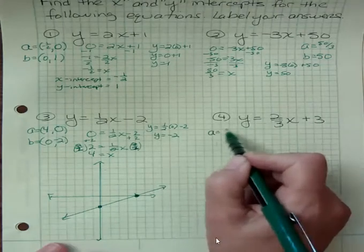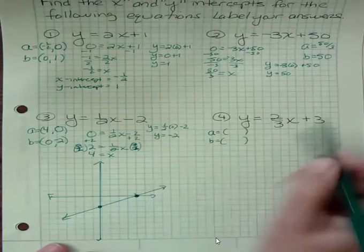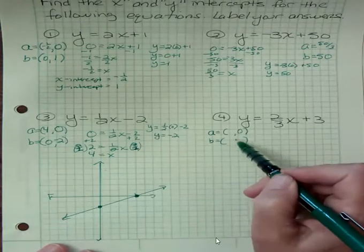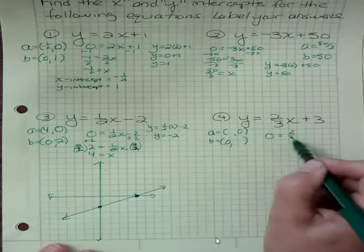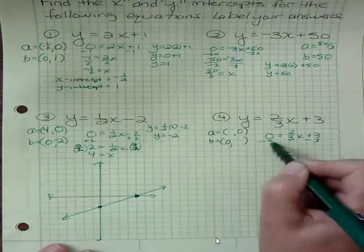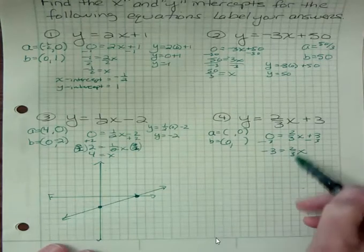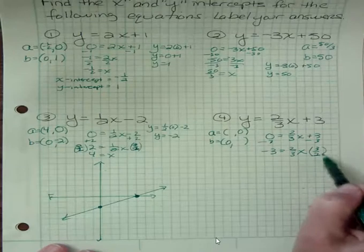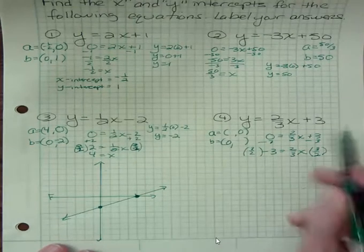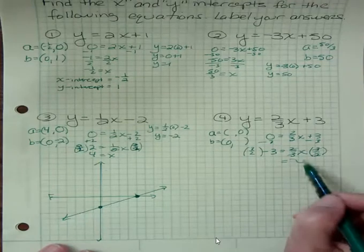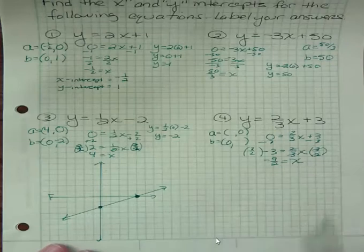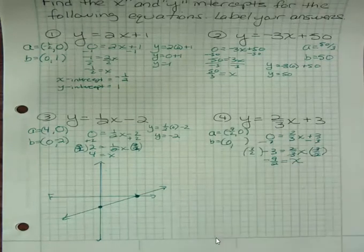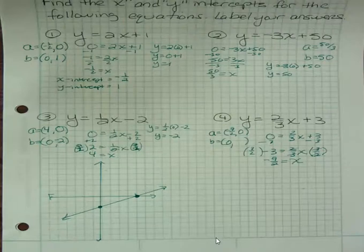What about a and b here? Well, if I want to find the x-intercept, I need zero and the y-intercept, I need zero. So what if y was zero? Then I would subtract three from both sides. And then I would multiply by the reciprocal, which is three halves. And what that does over here is it makes the twos cancel and the threes cancel and we get x. And over here I have three times negative three, which is negative nine halves. So I have negative nine halves as my x-intercept. We cannot abbreviate x and y-intercept with x and y. We have to use a and b. That's an important point.